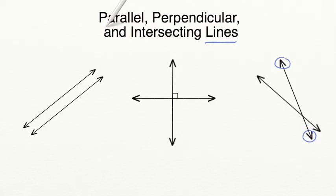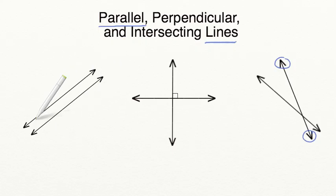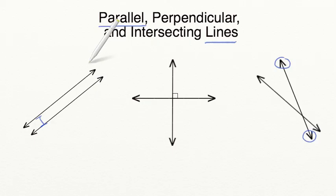Let's start by talking about parallel lines. Parallel lines are two lines that run alongside each other and are always the same distance apart. They're never going to meet, and the distance between the two lines is never going to change.